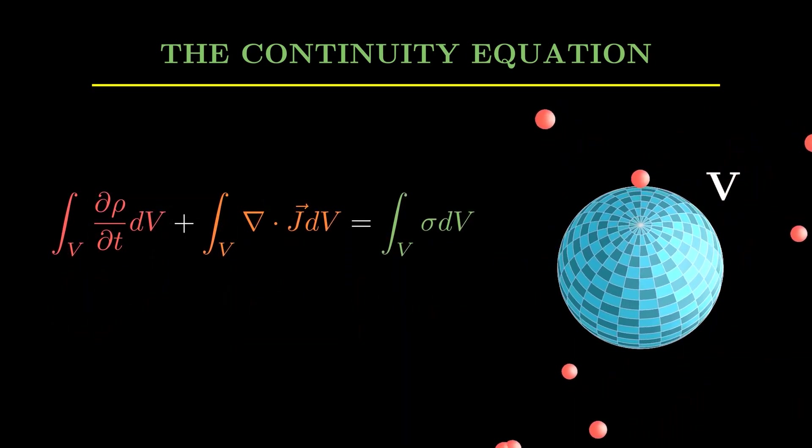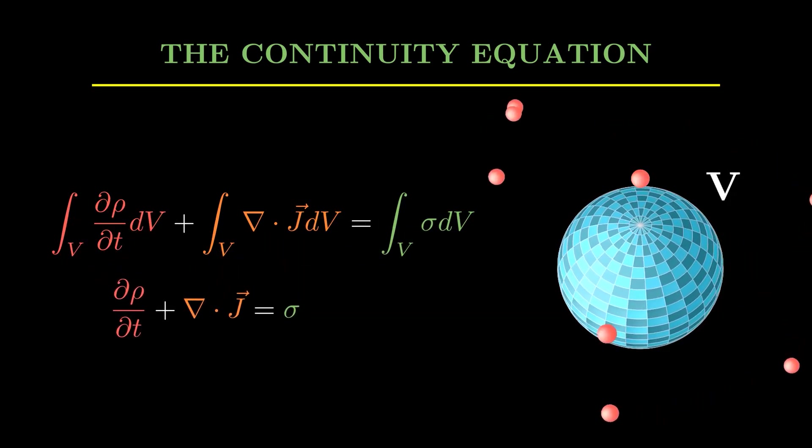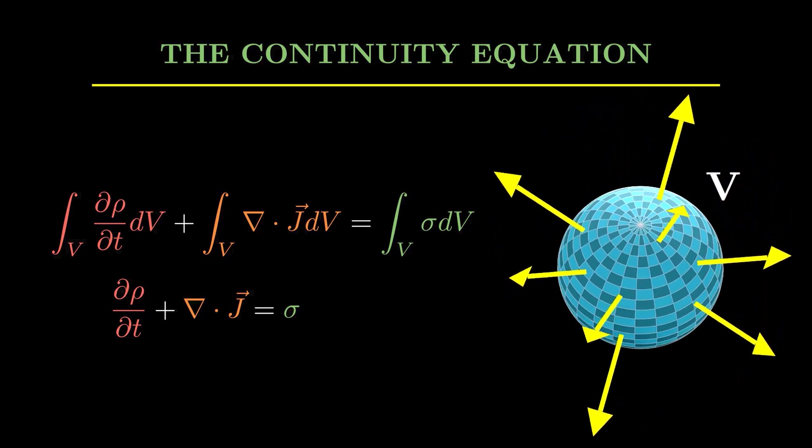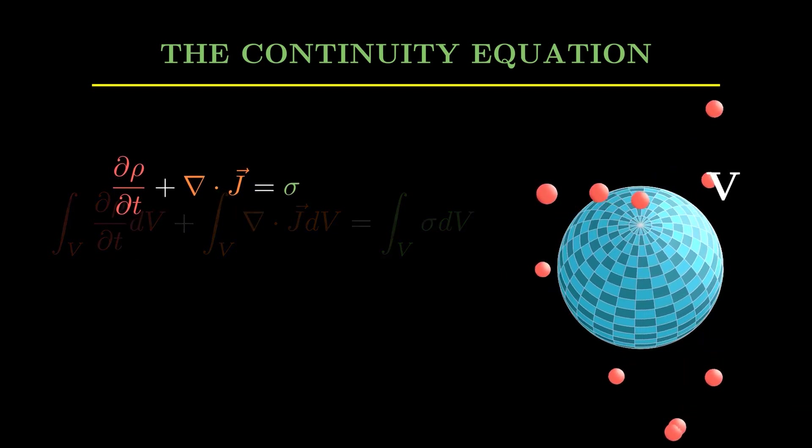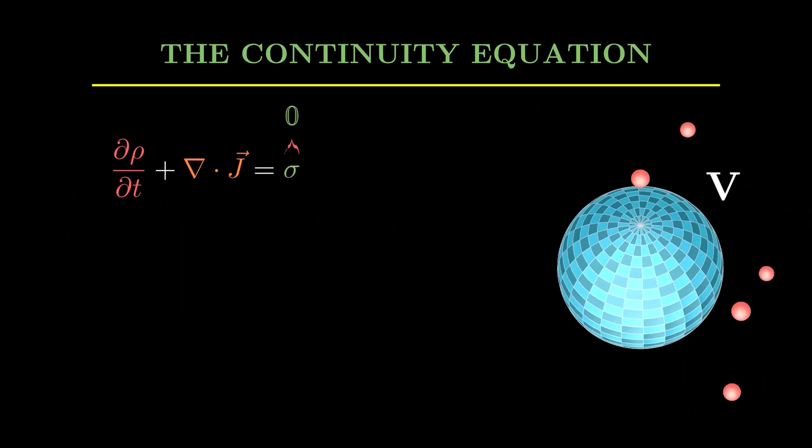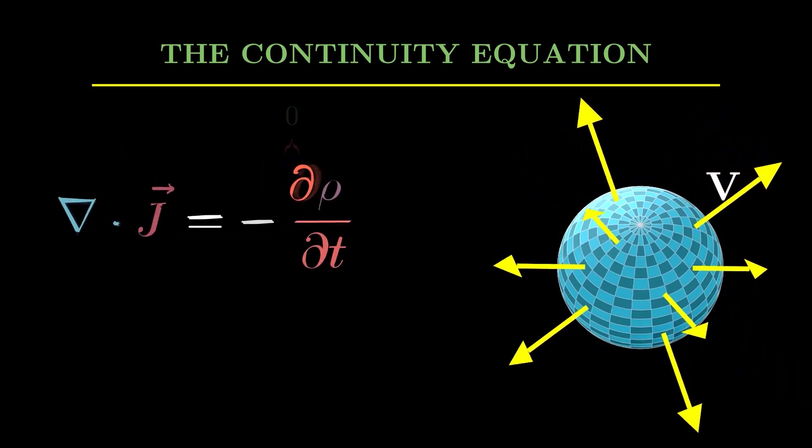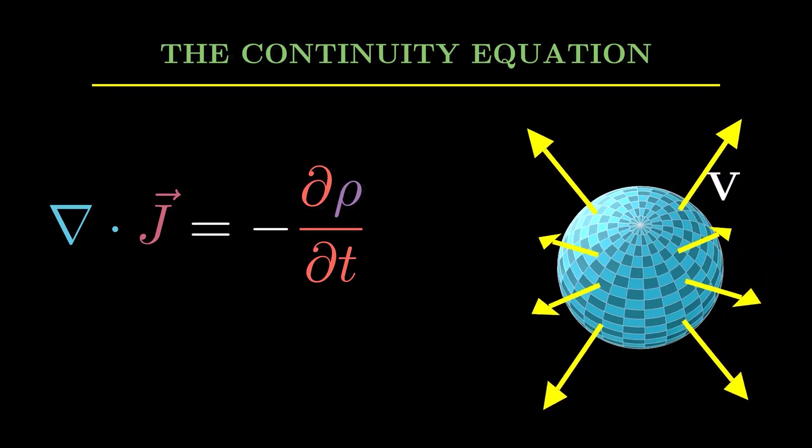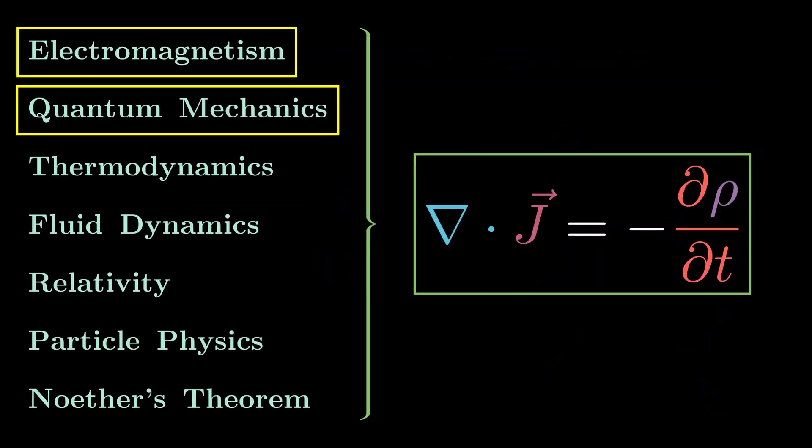Now considering the terms inside the integral gives us this equation, and then we will think about two cases. In most of the physics you will often deal with conservation laws, which will give us this σ to be zero. That then gives us this beautiful equation which we were telling in the starting of this video.